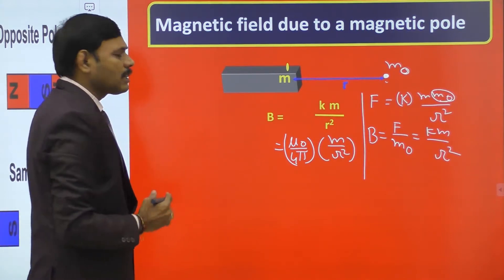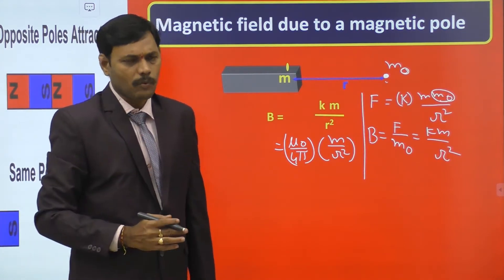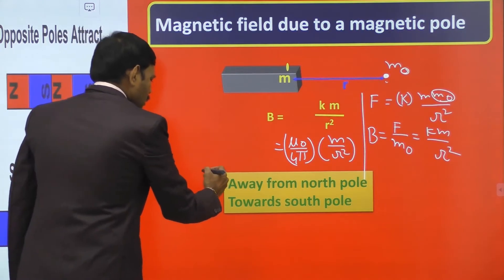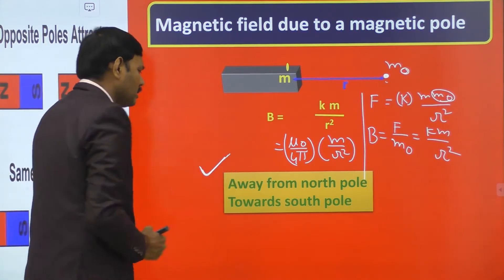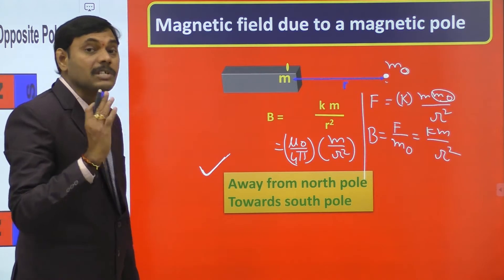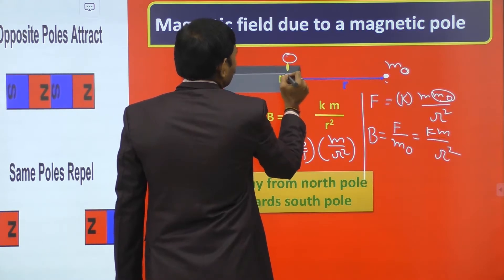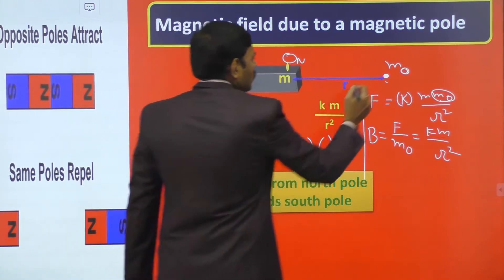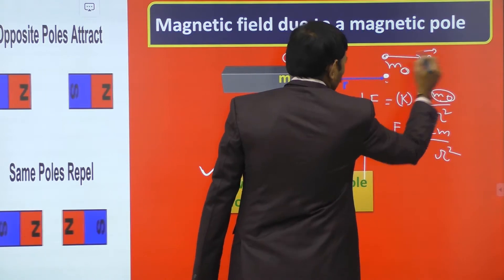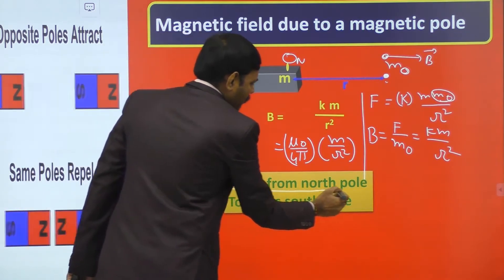The direction of B⃗ is very important. If the magnetic pole is a north pole, the magnetic field B⃗ is away from the north pole — directed outward. This is because magnetic field is defined as the force on a unit north pole: a north pole repels a unit north pole, so B⃗ is away from north pole.